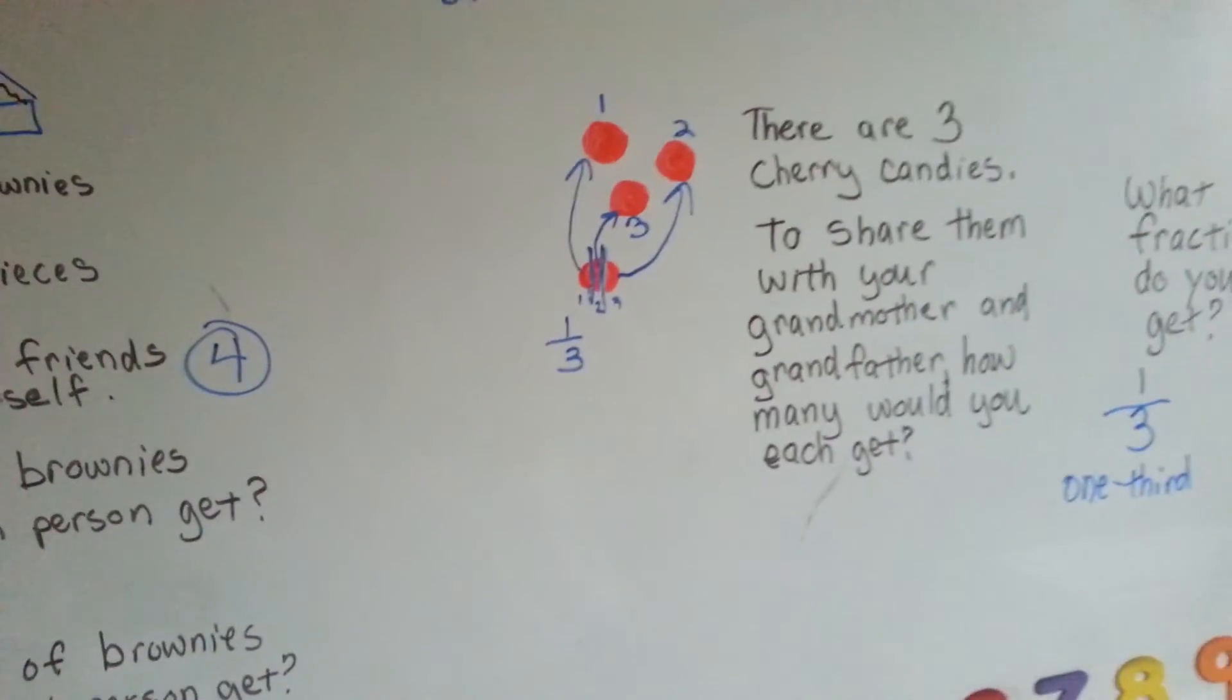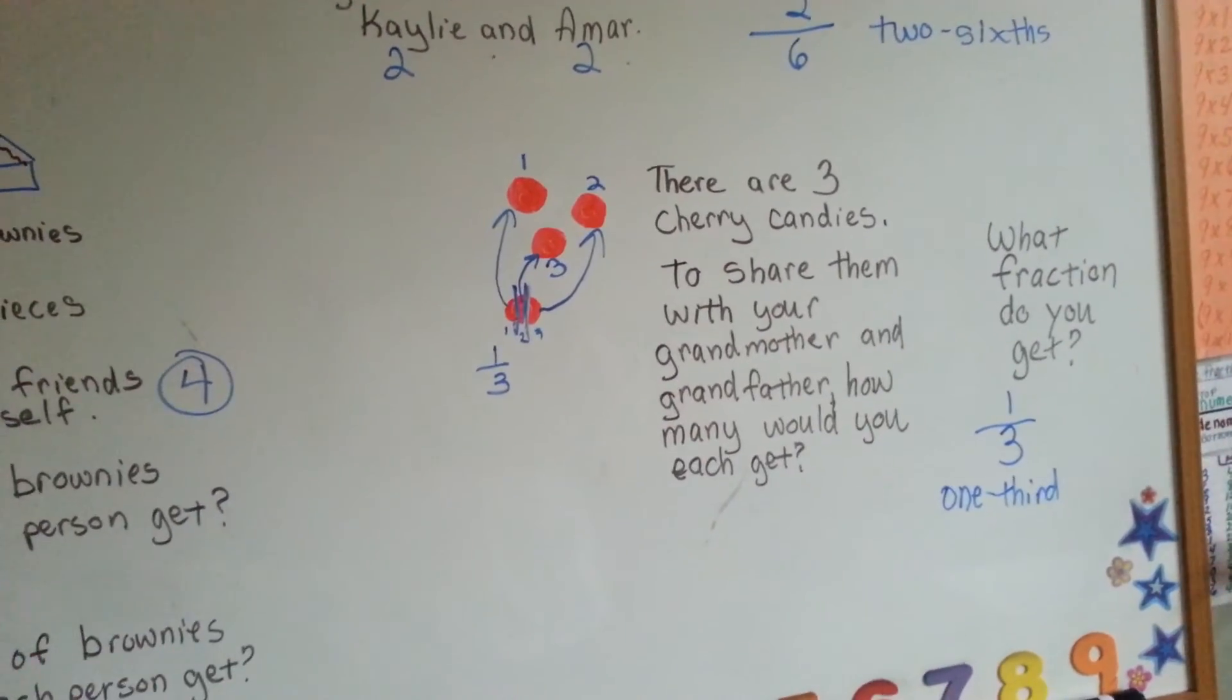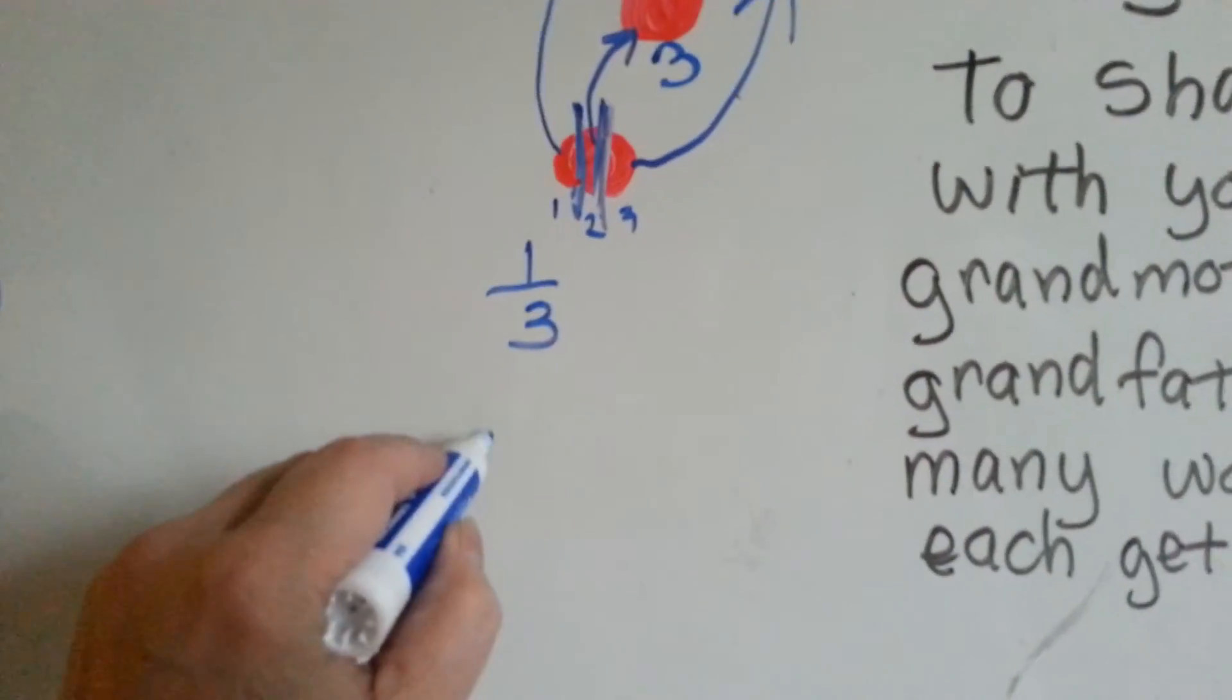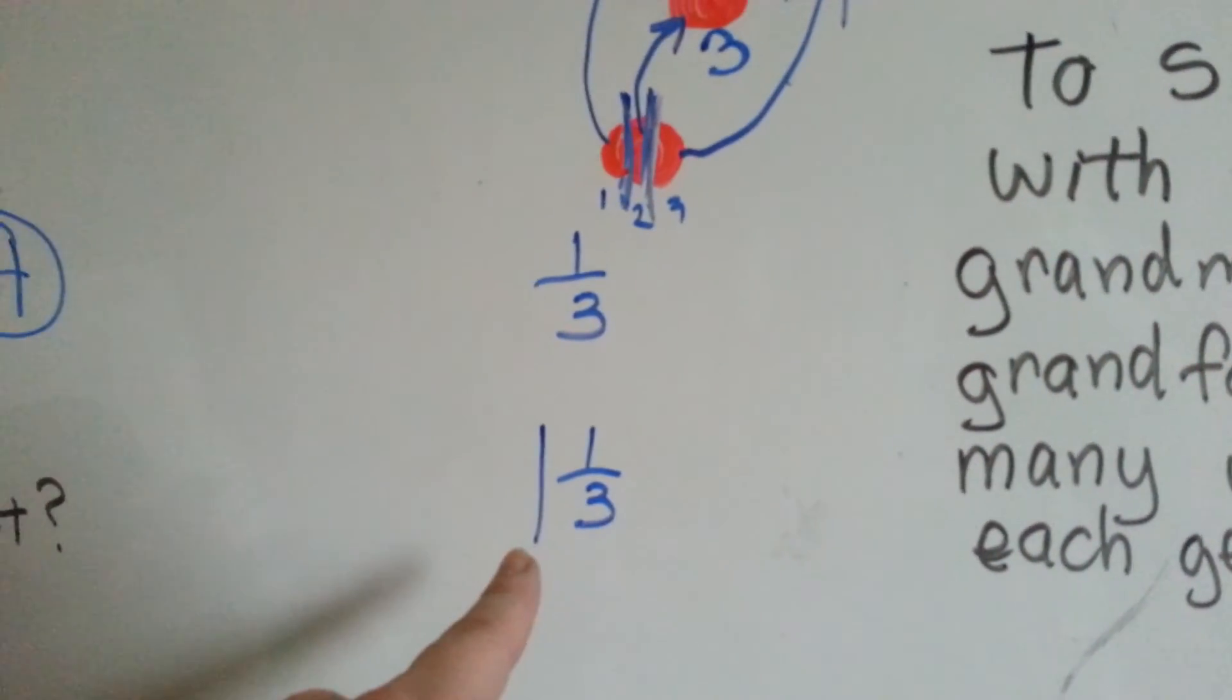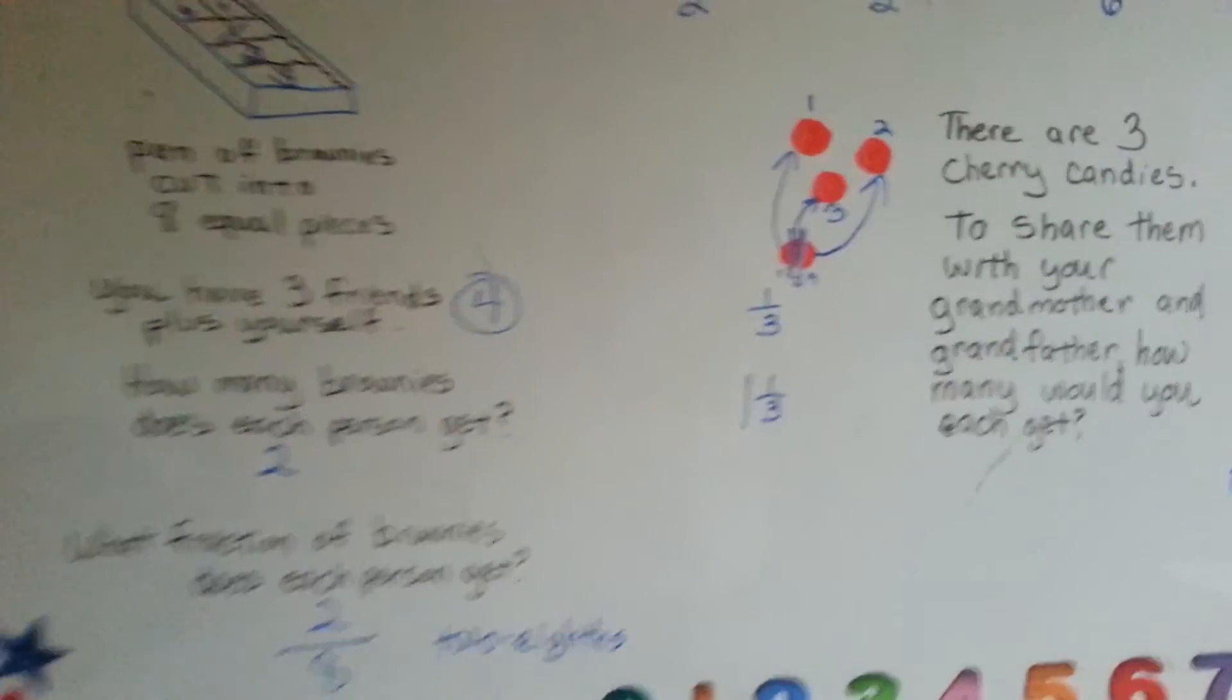Equal sharing. That means each person would get one and a third candies. That would be written like this: one and one third. They'd get a whole piece and a third of a piece. Equal sharing.